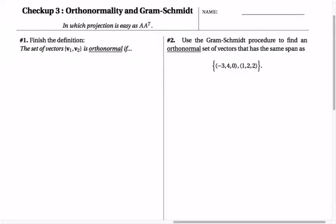First of all, if I have a set of two vectors V1, V2, then what does it mean for that set to be orthonormal? What did you write?